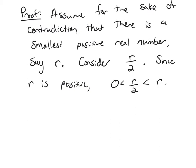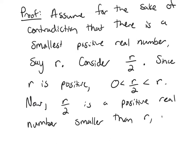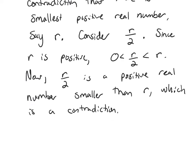So let me write some of what I just said down. Now, R over 2 is a positive real number smaller than R, which is a contradiction because we said R was the smallest.